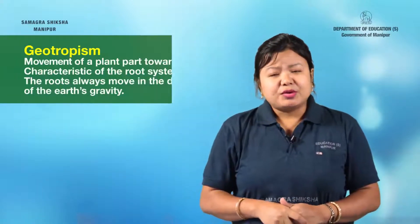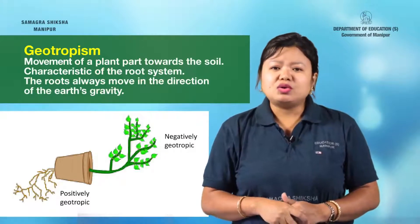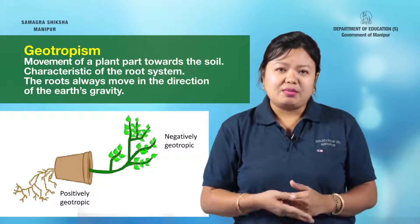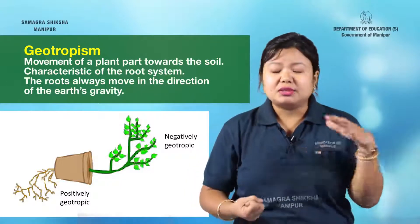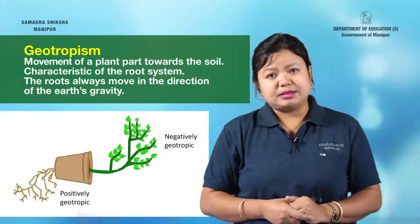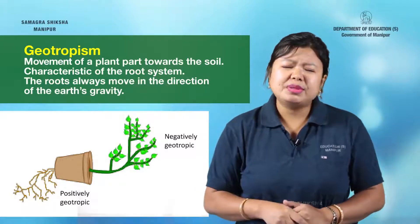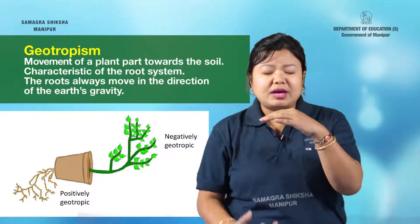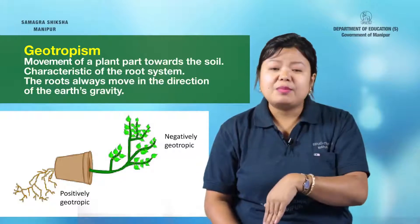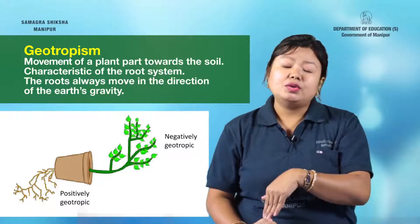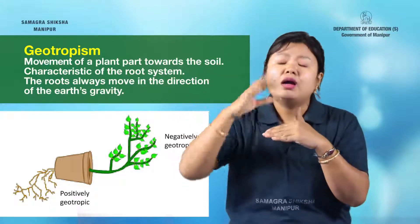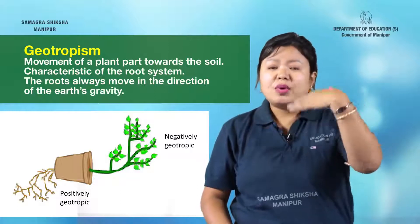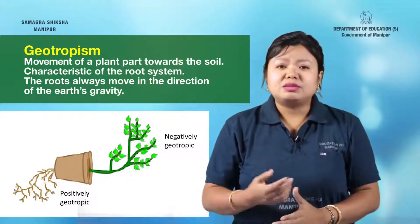In tropic movements, there is also geotropism. Geotropism is the movement of the plant in response to the earth's gravity, towards the soil. For example, roots are positively geotropic, while shoots are negatively geotropic.